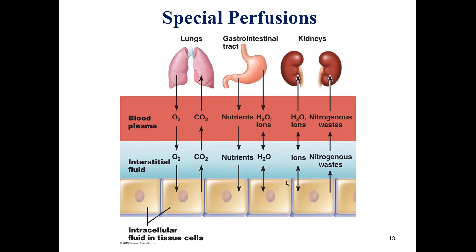Here we see different or special types of perfusion. Most organs or tissues in our body have the same perfusion as described in the previous slides. However, in special organs we have a special type of perfusion. For example, in the lungs, normally the blood supplies the tissue with oxygen and removes CO2, whereas in the lungs this perfusion is the opposite — the lungs supply the blood with oxygen and remove CO2.